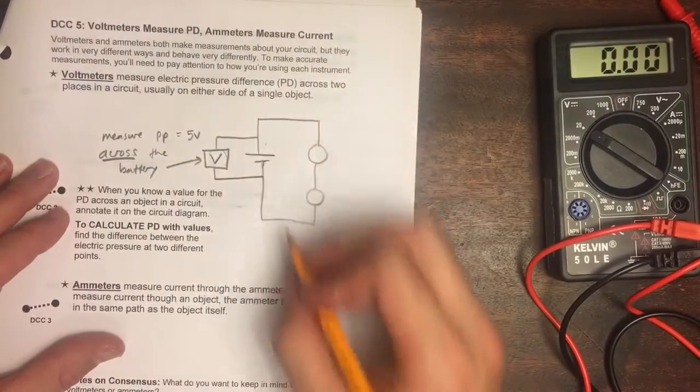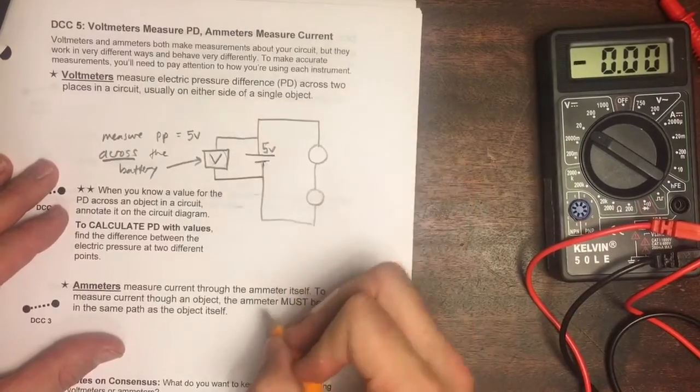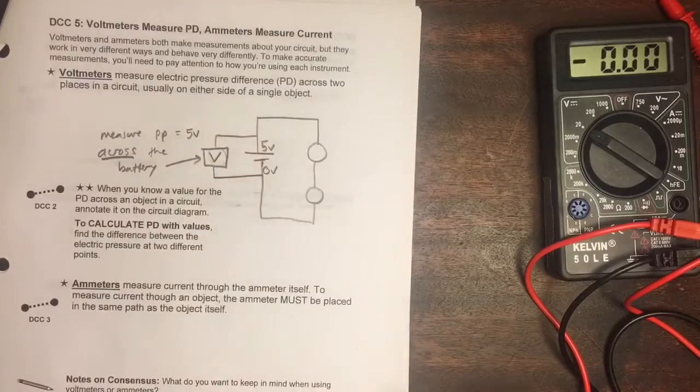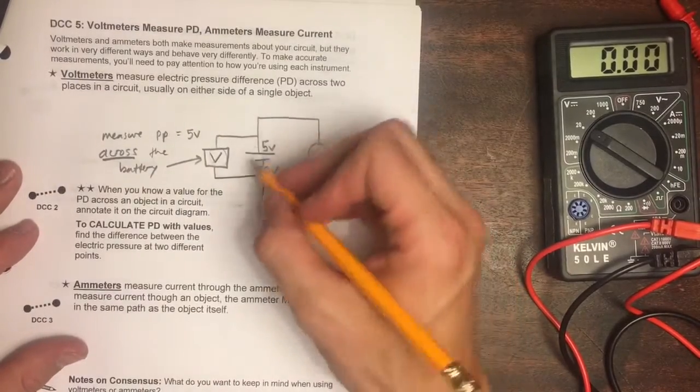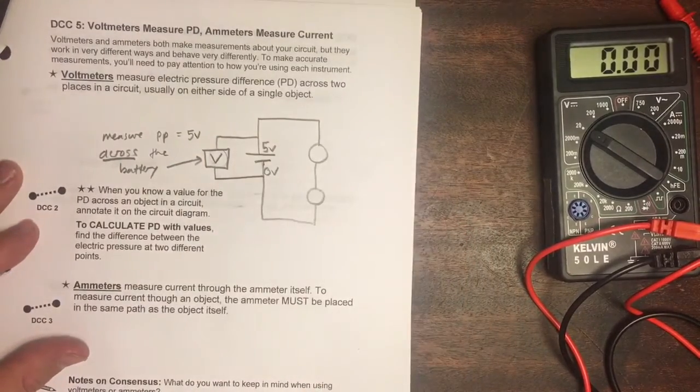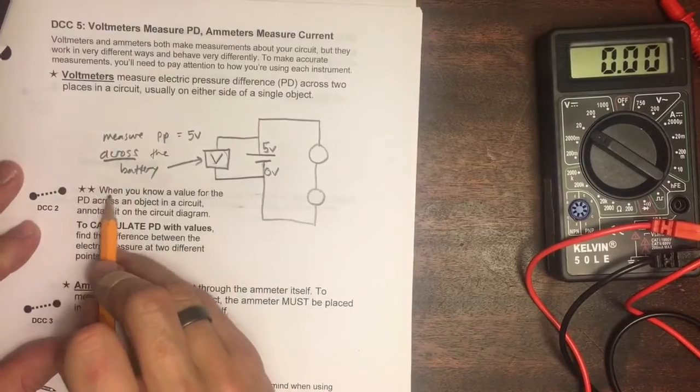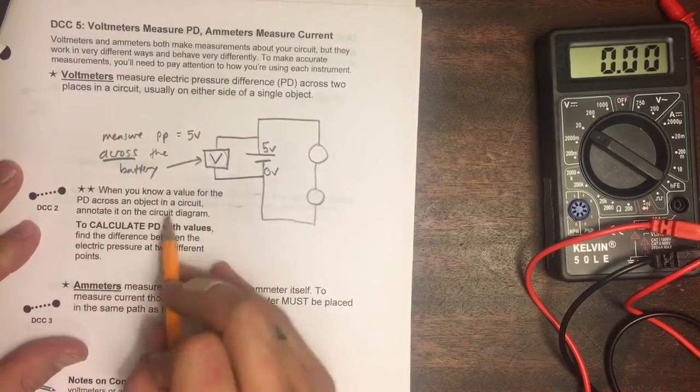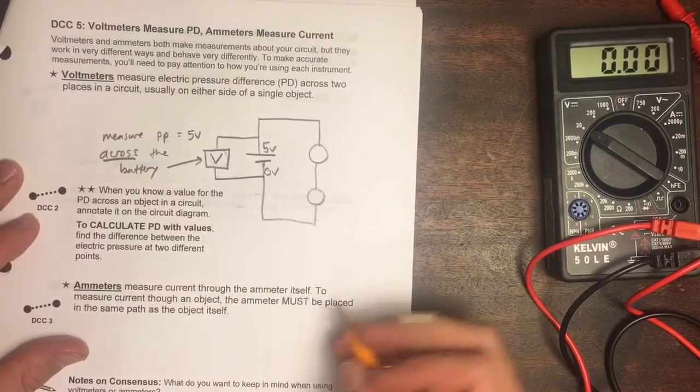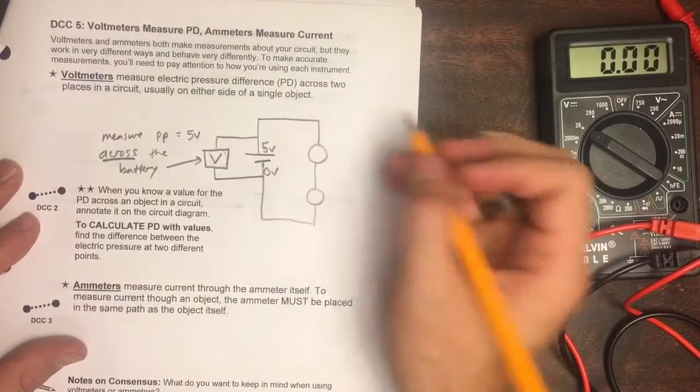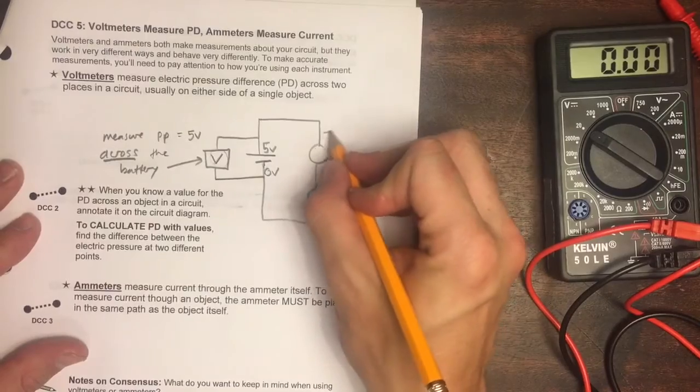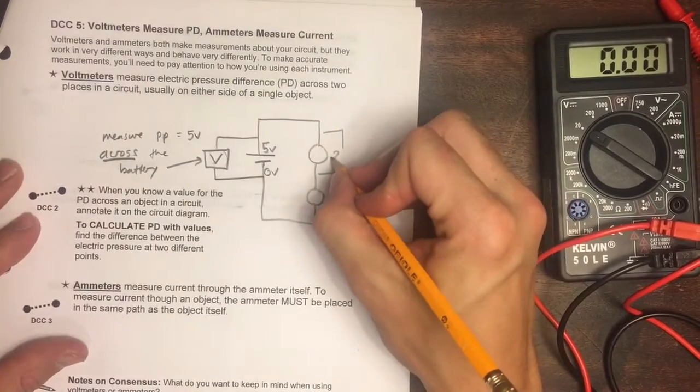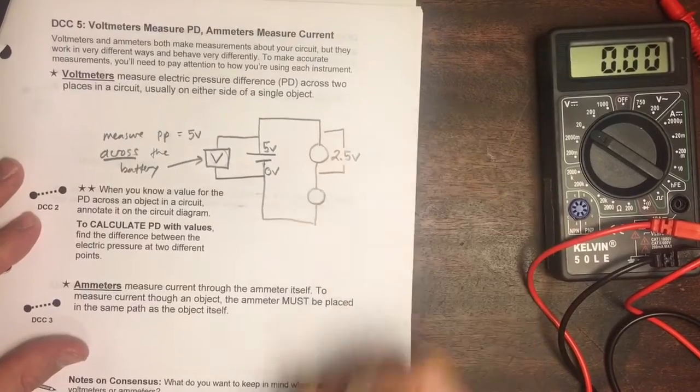So the PD across the battery equals five volts. One way of showing that would be to show five volts and zero volts. We've only annotated pressure so far with letters, but we can do it with numbers too. I'm doing this because when you know a value for the PD across a circuit in a diagram, you can annotate it on the circuit diagram. We've done this with numbers in our lab.